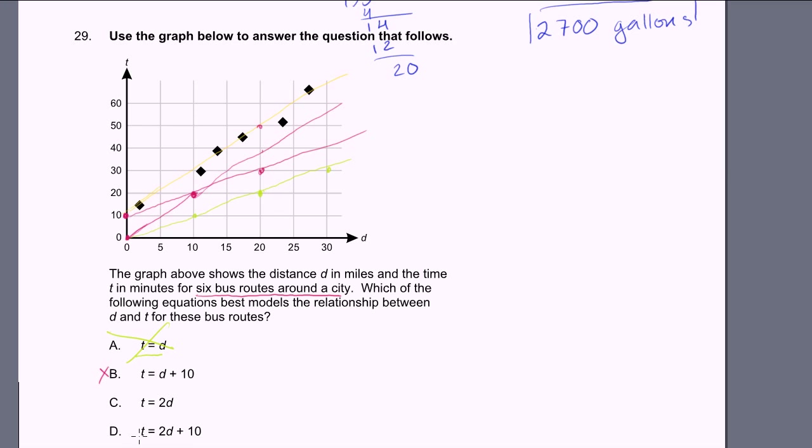Let's look at the last choice. I'm guessing the last choice is going to get us right there. t is equal to 2d plus 10. So we start at 10. When d is 0, t is 10. When d is 10, we get 2 times 10 plus 10, we're going to go to 30. When d is 20, 2 times 20 plus 10 is 50. So the line looks something like this, which is a pretty good fit of the curve. It's definitely the best out of the four choices. So I'll go with D.